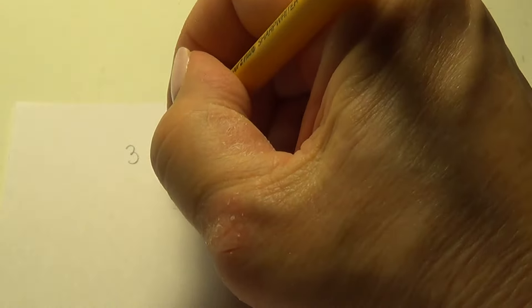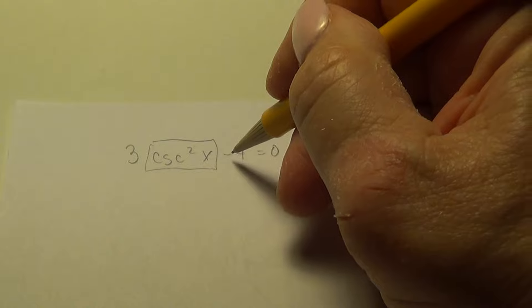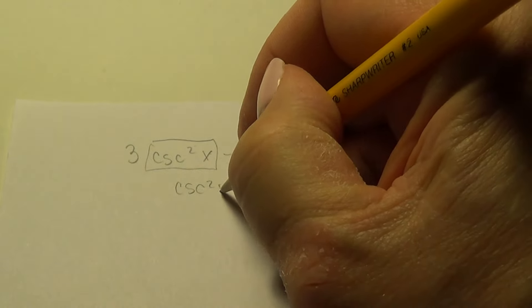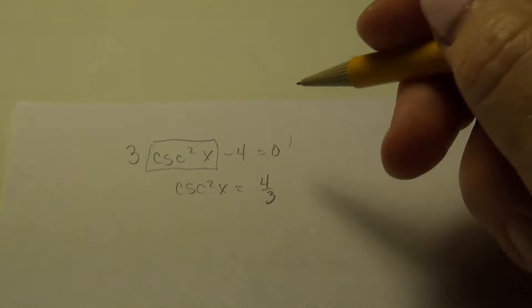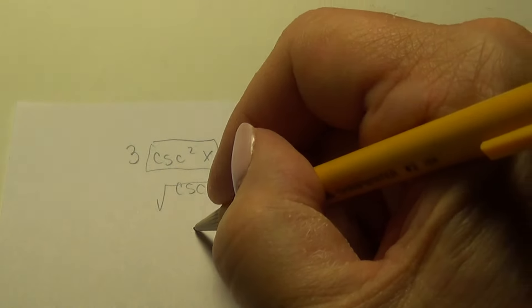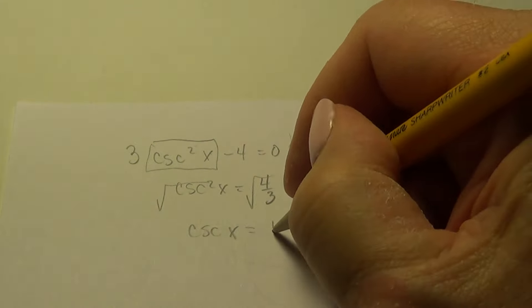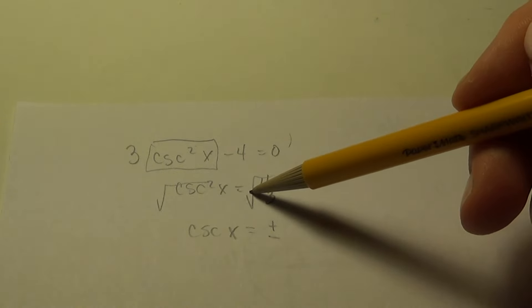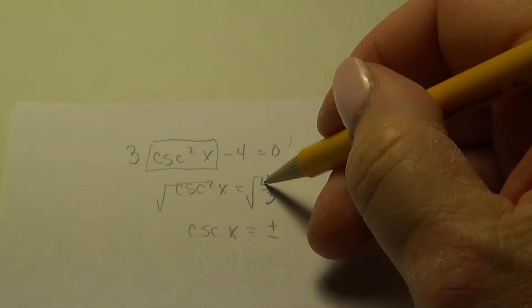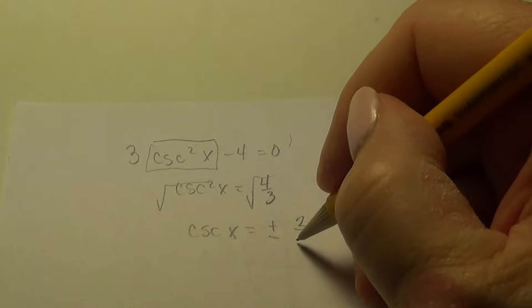Alright, moving right along. So let's look at 3csc²x - 4 = 0. And this is one that I will do. And I'm going to get csc²x by itself. So I'm going to move the 4 over and divide by 3. And now I want cosecant by itself, so it requires a square root of both sides. And so, one mistake that was often made in the assignments I hand it back, was the square root of both sides creates a plus or minus.